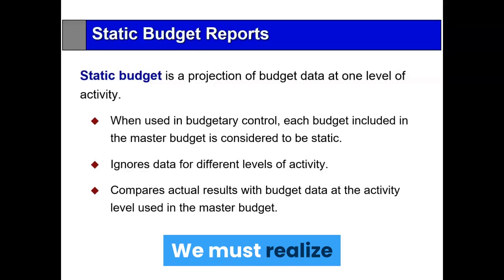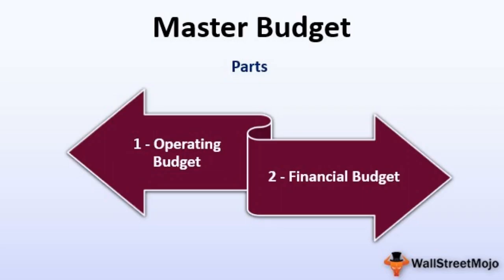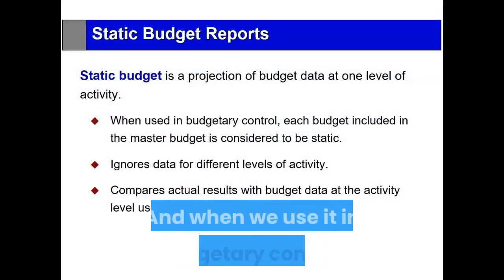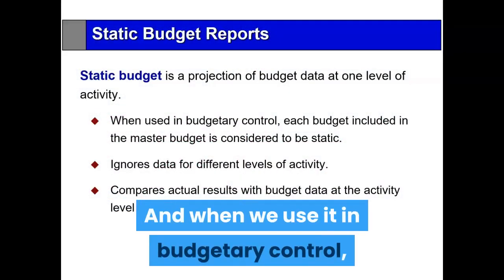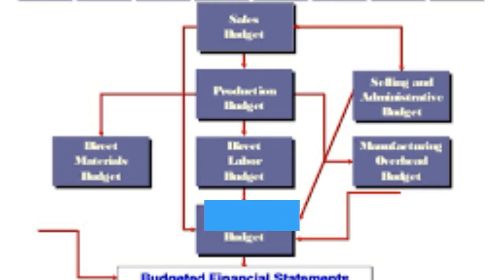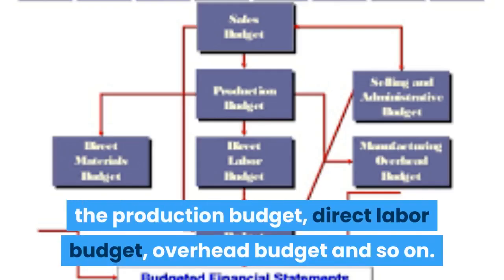We must realize, though, that the budget is a projection at one particular level of activity, and therefore it is referred to as a static budget — it hasn't changed. When we use it in budgetary control, each budget included in the master budget is considered to be static: the sales budget, the production budget, direct labor budget, overhead budget, and so on.